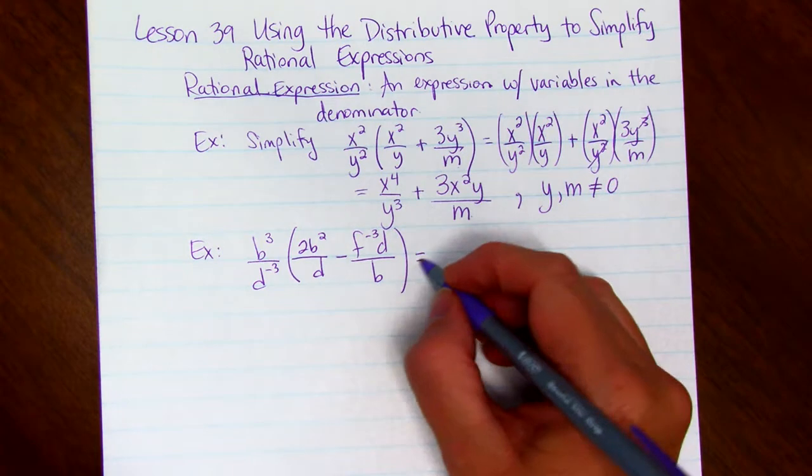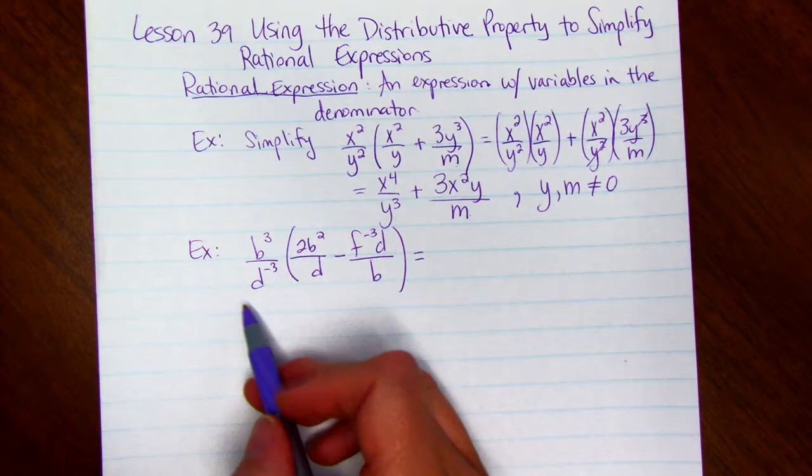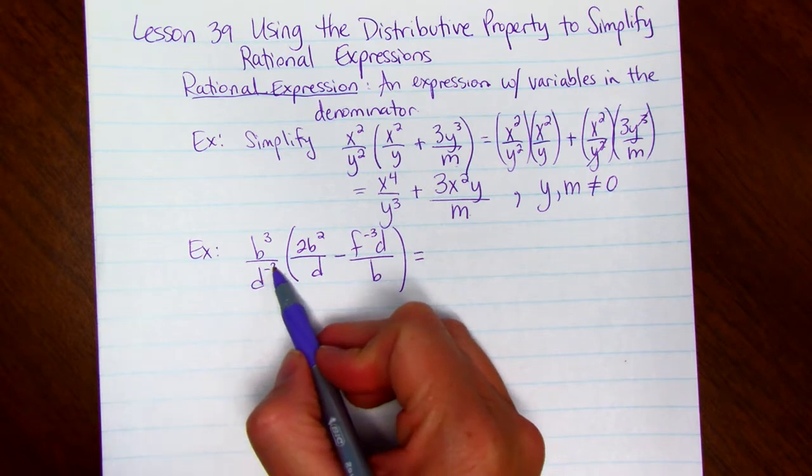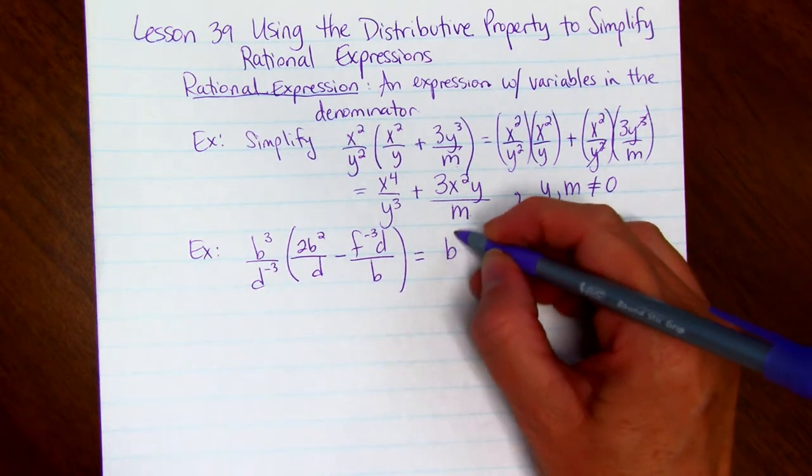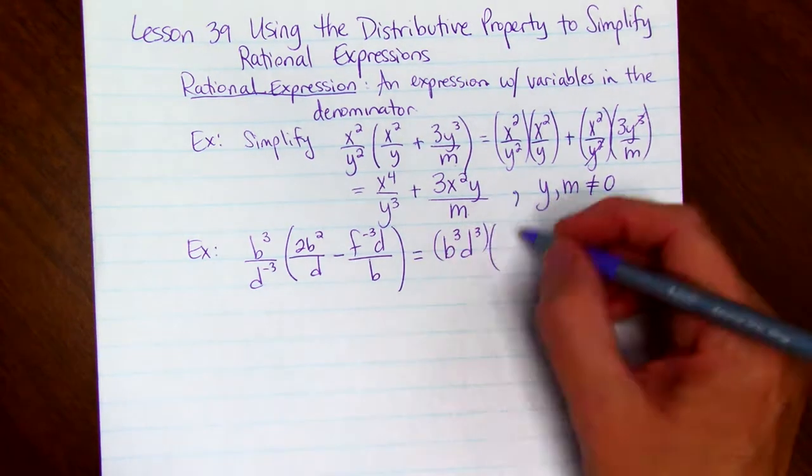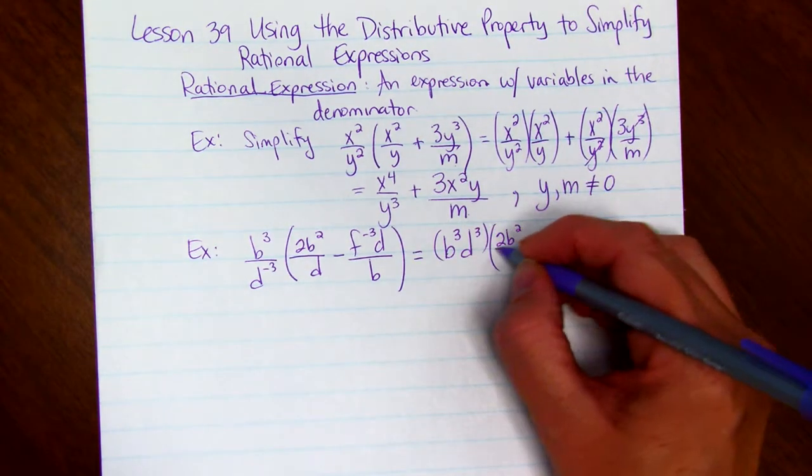Now we're going to take what's on the factor on the outside. Now d to the negative 3 just means d cubed. So we have b cubed d cubed, times the first term, 2b squared divided by d.